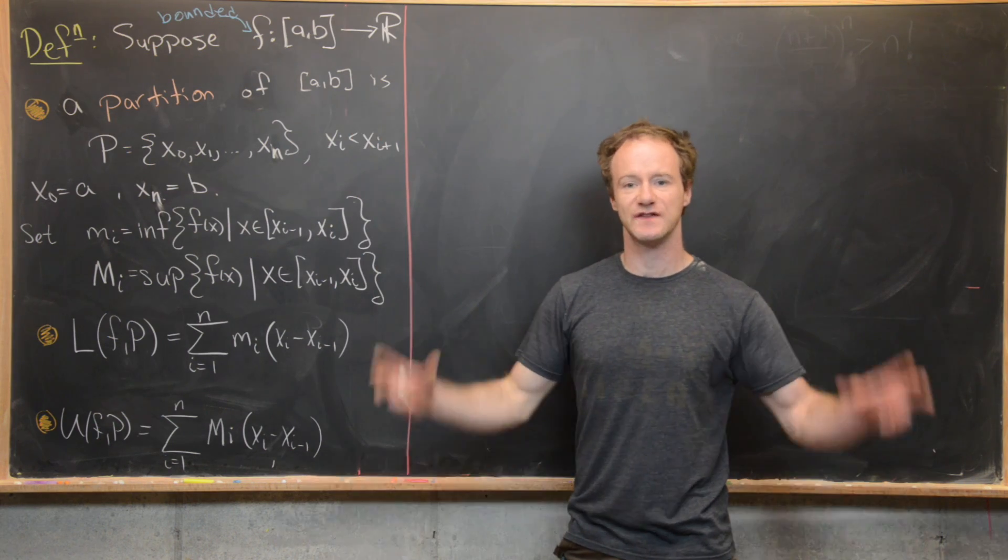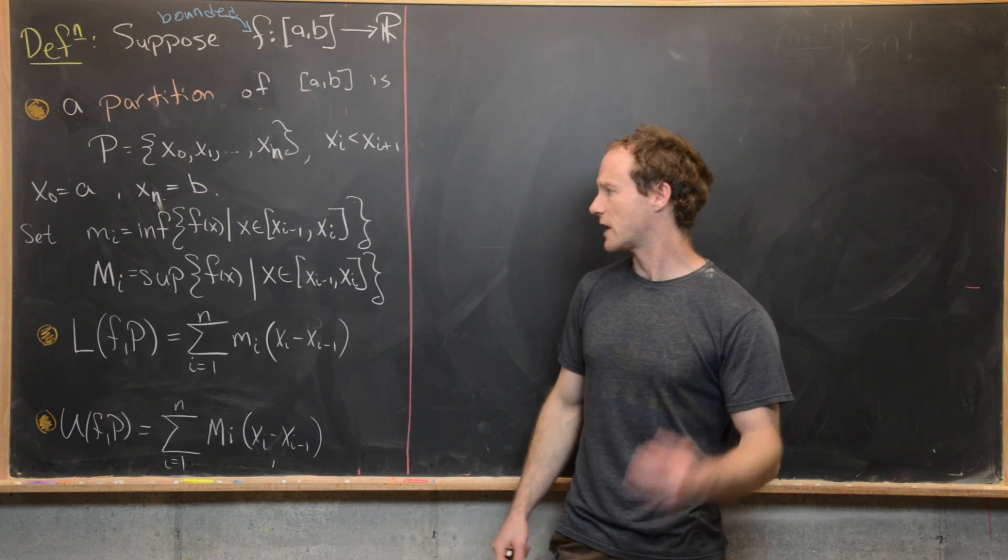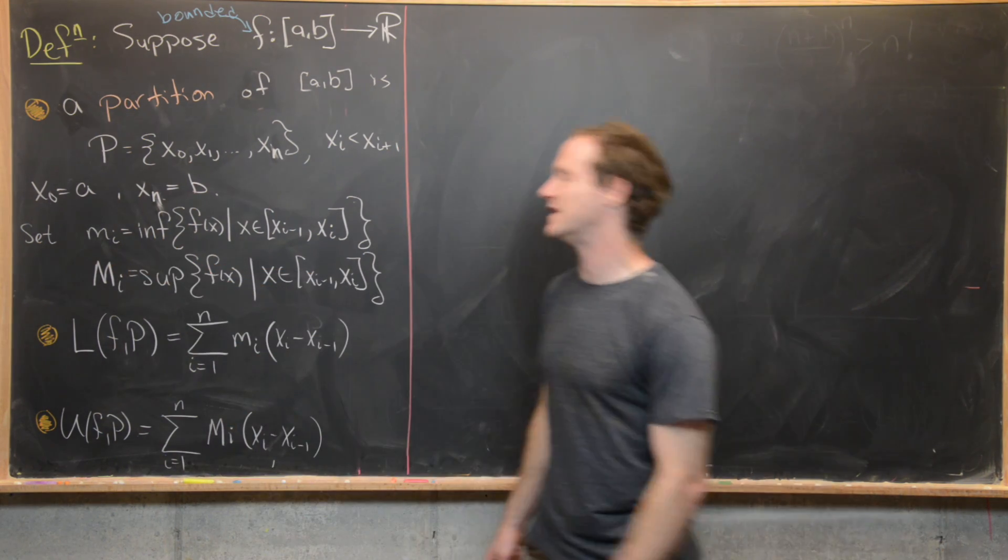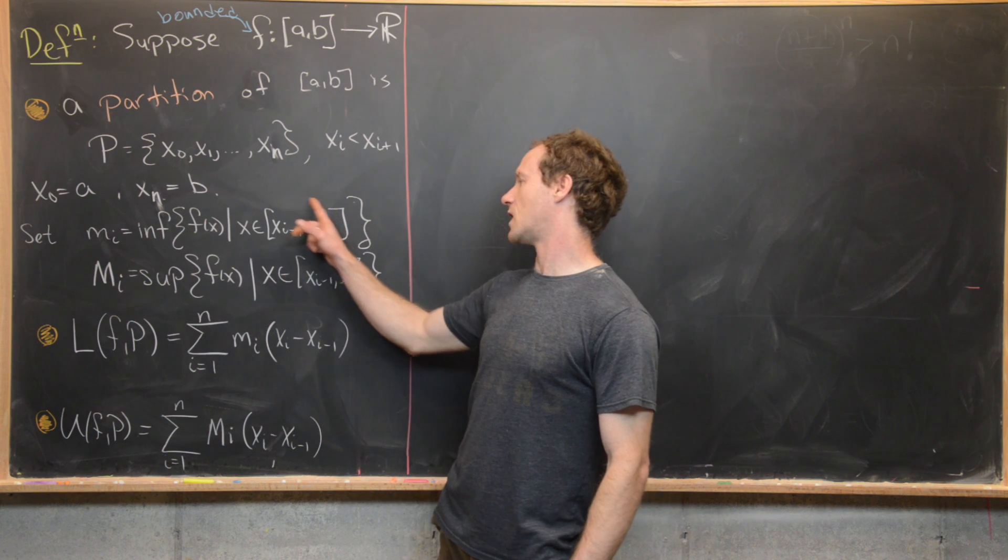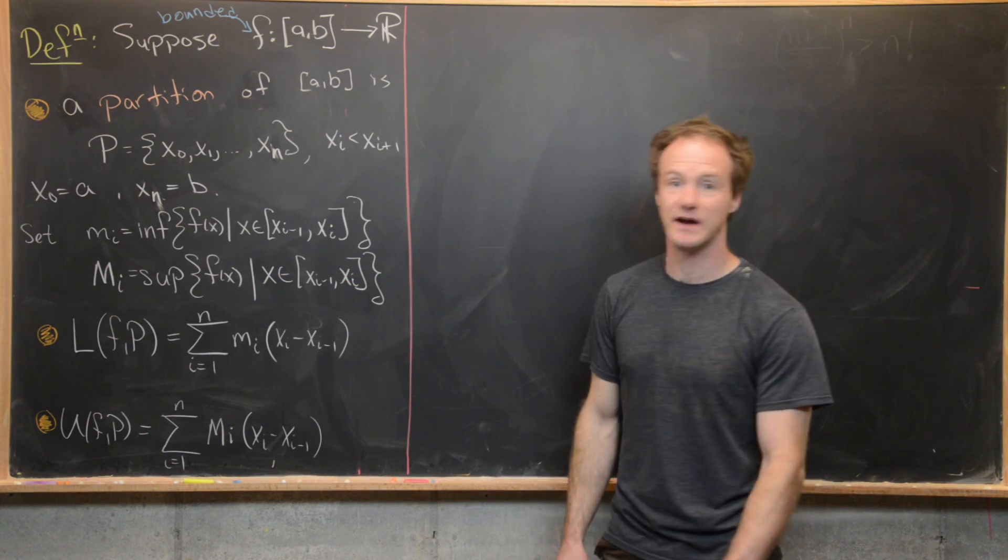So notice that's going to partition this interval [a,b] into all of these pieces. Next we want to set little m_i equal to the infimum of f(x) as x goes on this i-th subinterval. So it's between x_{i-1} and x_i.